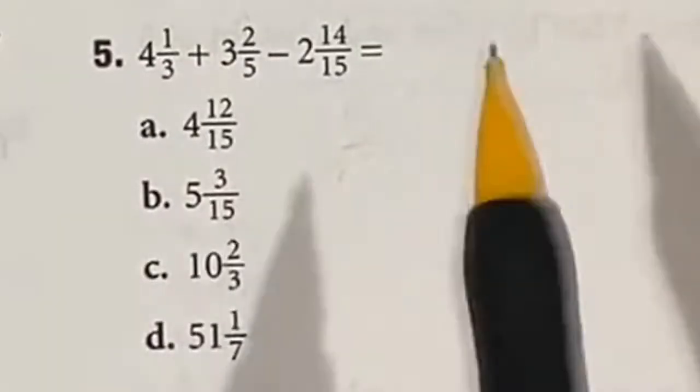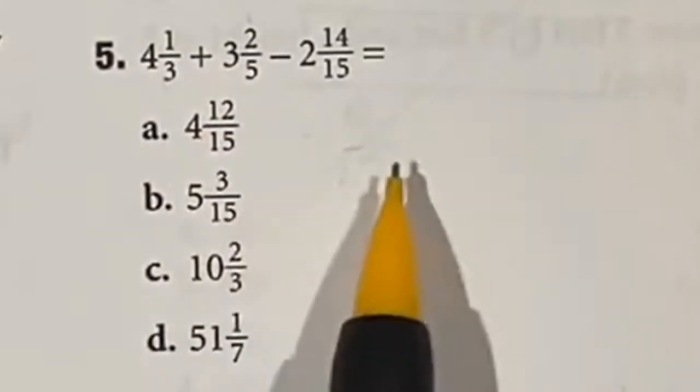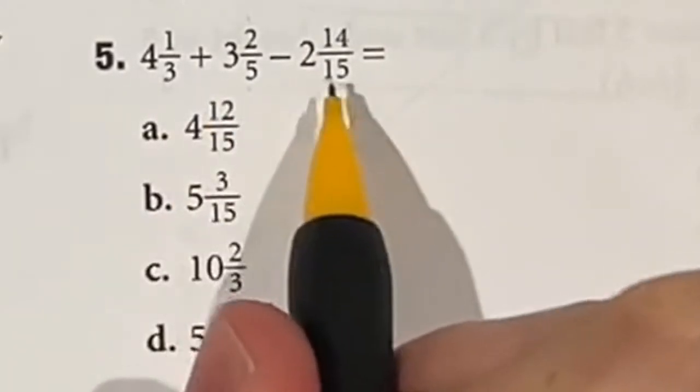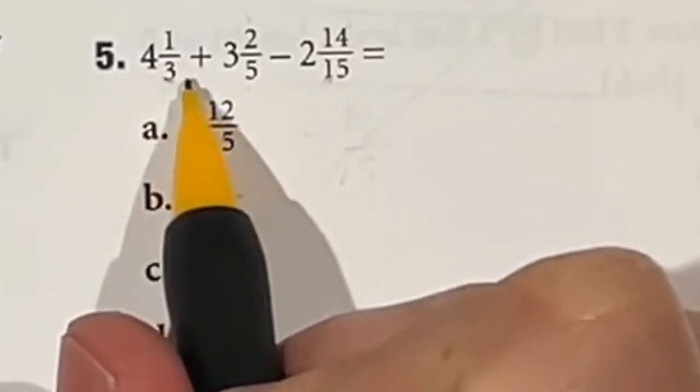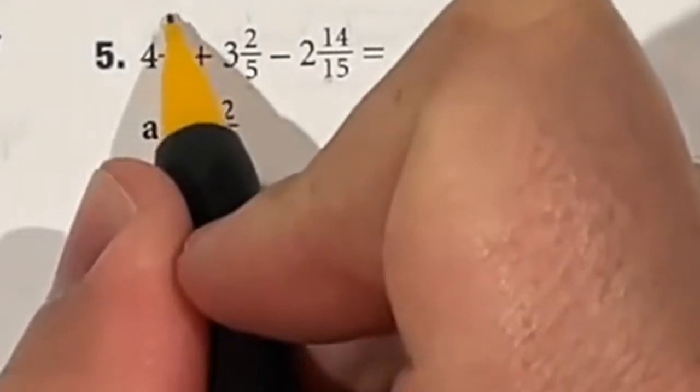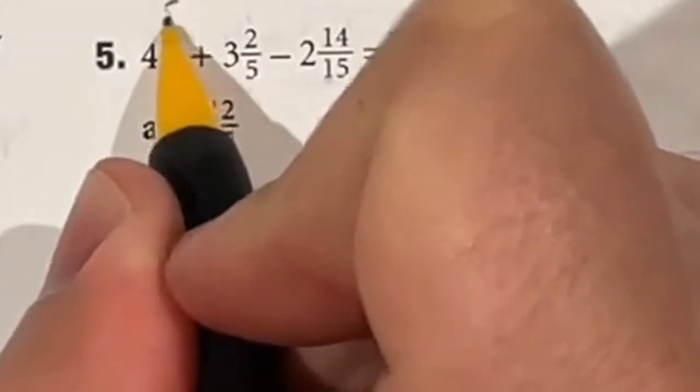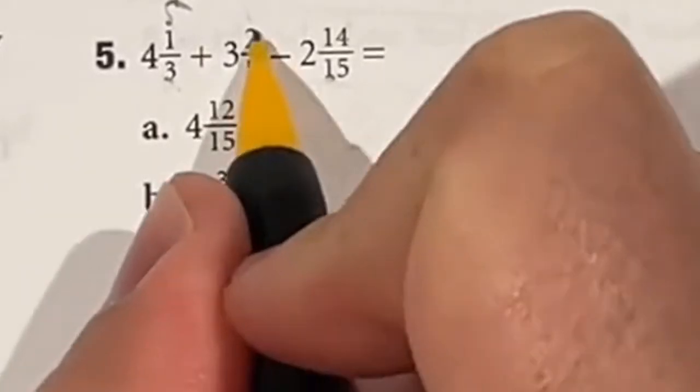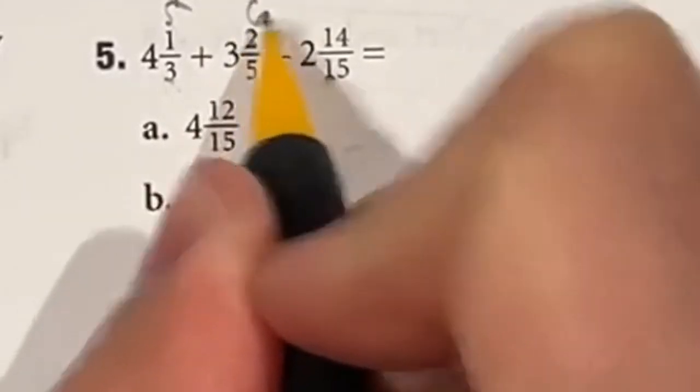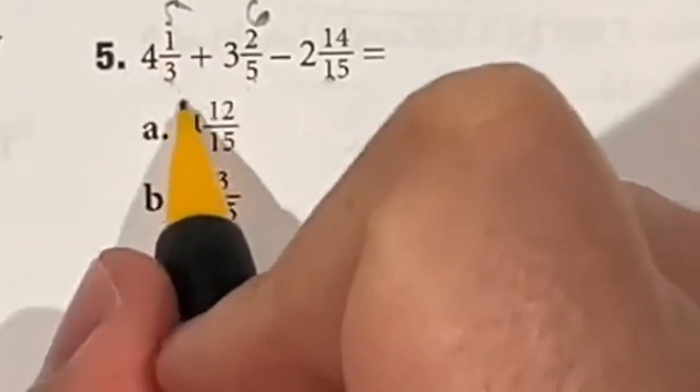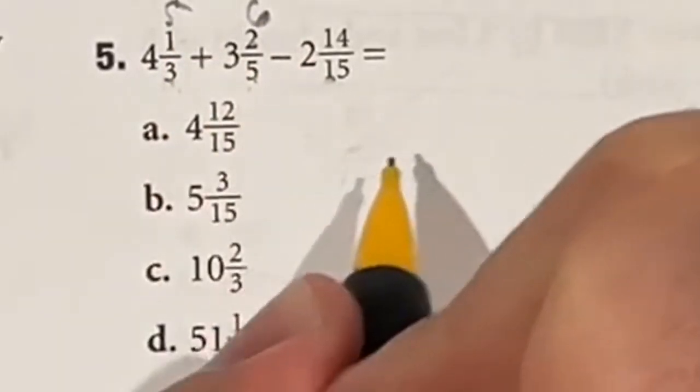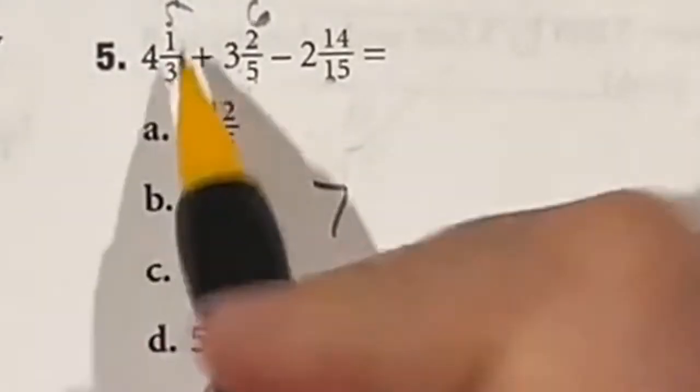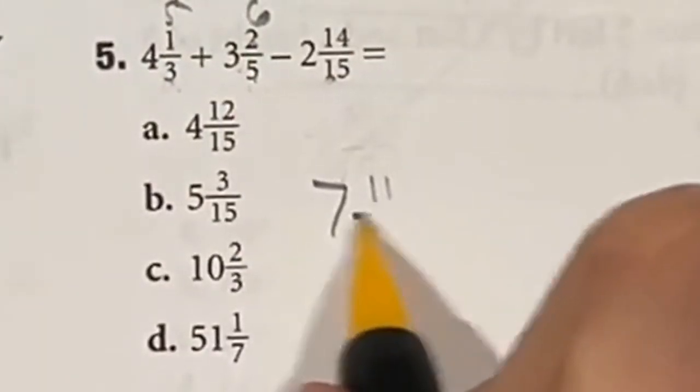So just adding and subtracting fractions here. Again, I'm going to do it the long way just because I have the time to still do that under a minute. So let's first off get the bottom numbers all to be the same 15. I'm going to multiply this first one by 5 because 3 times 5 gives me 15. If I multiply the bottom by 5, I multiply the top by 5. So 1 times 5 is 5. So that's 5 over 15. For this one, 5 times 3 gives me 15. So I have to multiply the top by 3 as well. 2 times 3 is 6. So really, we're looking at 4 and 5 over 15 and 3 and 6 over 15. Now if we add those together, that's going to end up giving me 4 plus the 3, which is 7, and 5 plus the 6, which is 11, over that 15.